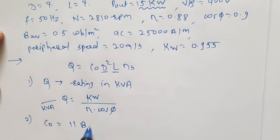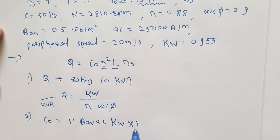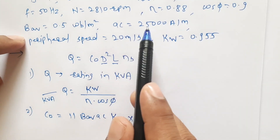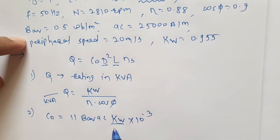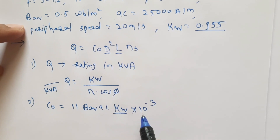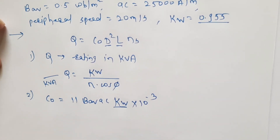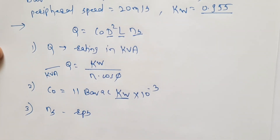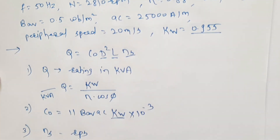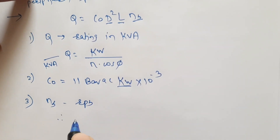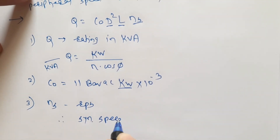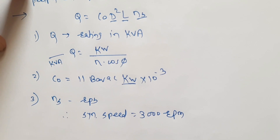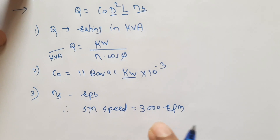So first we convert to input KVA using Q equals KW divided by efficiency into cos phi. The second step is to find the output coefficient C0, which equals 11 times B_AV times AC times Kw into 10 to the power minus 3. The third step is to find small ns, the synchronous speed in RPS. The actual speed given is 2810 RPM, so we assume the nearest synchronous speed is 3000 RPM, since N is always less than Ns.